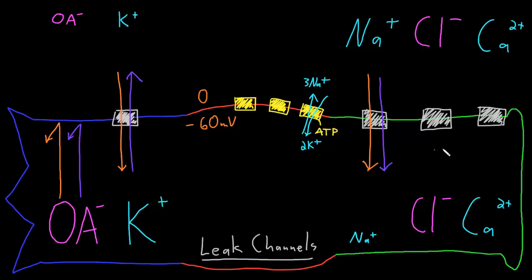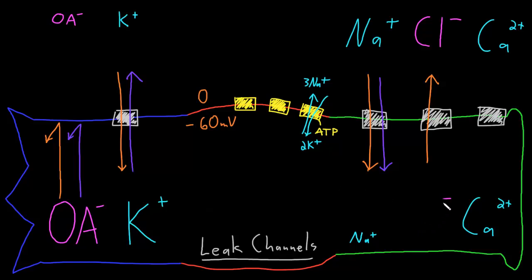The resting membrane usually has an intermediate permeability to chloride ions of around 45% of the permeability to potassium ions. In contrast to potassium and sodium, whose concentration gradients play a big role in creating the resting membrane potential, for chloride the resting membrane potential plays a big role in determining its concentration gradient. The membrane potential drives chloride out of the neuron until its concentration gradient is big enough to balance it, so normally there's a very small concentration of chloride inside the neuron compared to outside. Because of that, the equilibrium potential for chloride is usually at or close to the typical resting potential of around negative 60 millivolts.